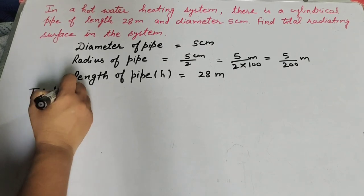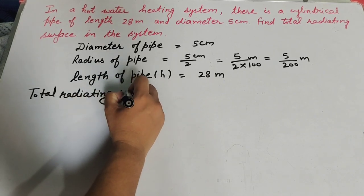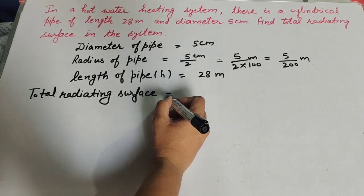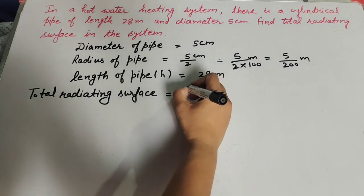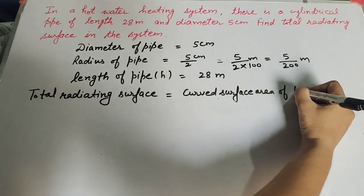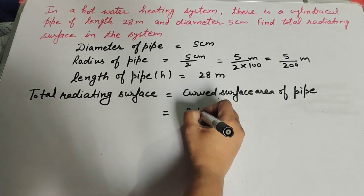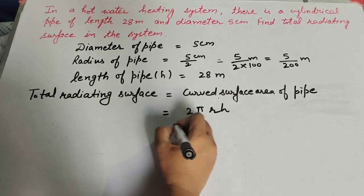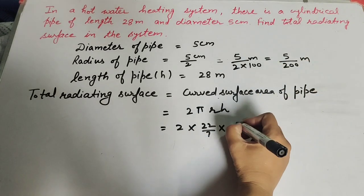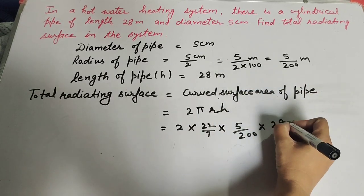Total radiating surface of the system equals the curved surface area of the pipe. We know the formula to find curved surface area of a pipe: it is 2πrh. It is equal to 2π — its value is constant 22 over 7 — r is the radius that we found, 5 over 200, and h is the height, 28 meter.